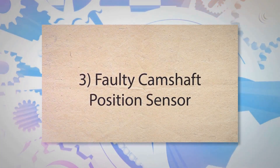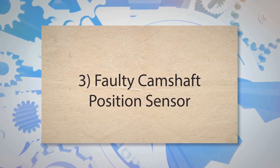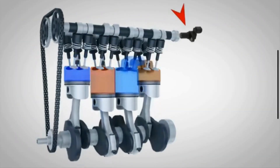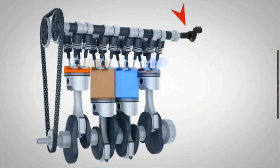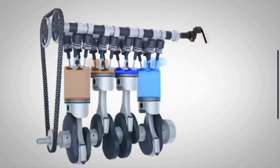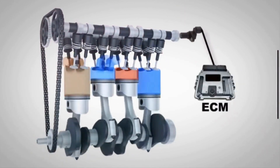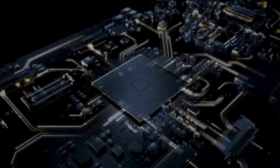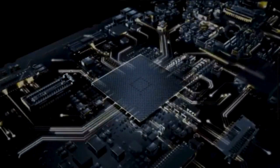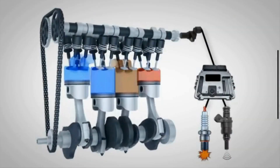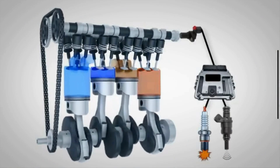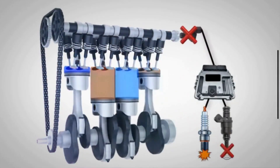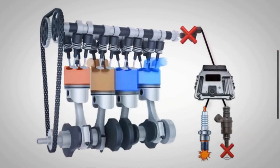Cause 3: Faulty camshaft position sensor. The function of the camshaft position sensor is to send information about the camshaft position to the engine control unit. The ECU uses this data to adjust the timing of the camshaft. A faulty sensor may send incorrect signals to the ECU, causing the camshaft to advance too much.